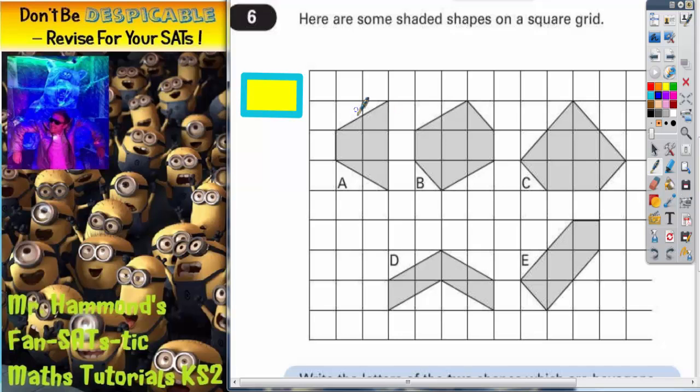And what I normally do is I go around each shape and I put a line on each side as I'm counting, so I know which sides I've already counted. So shape A has got one, two, three, four sides.